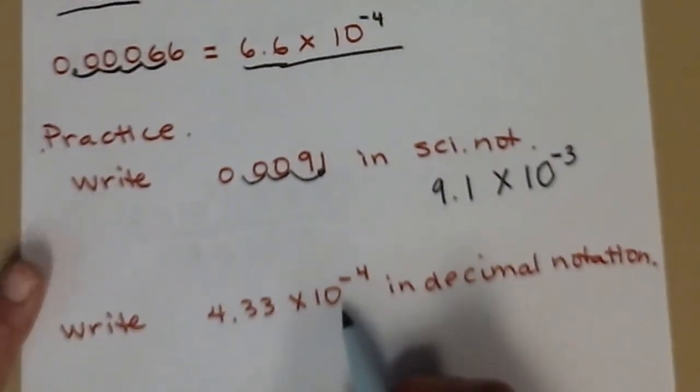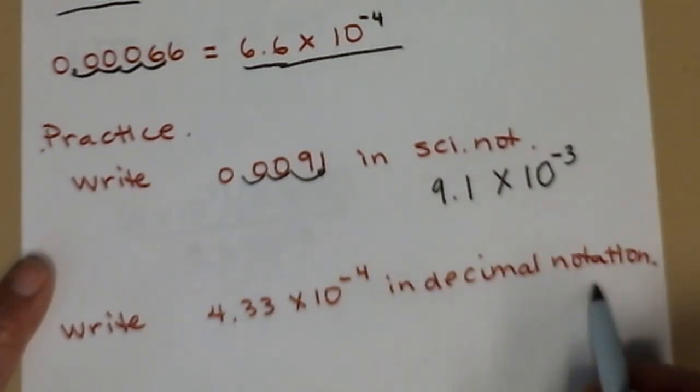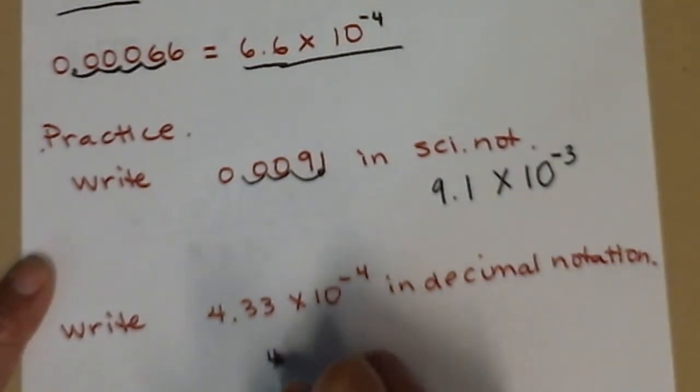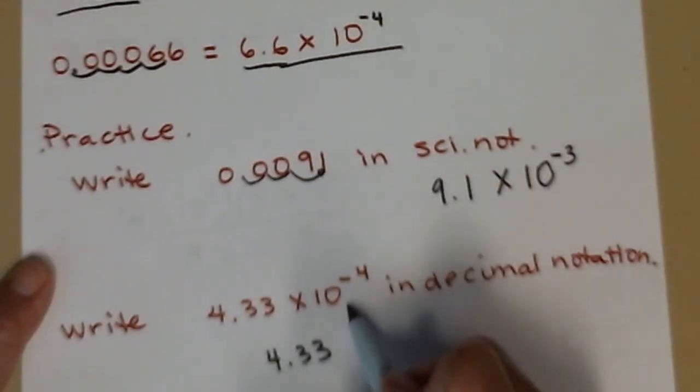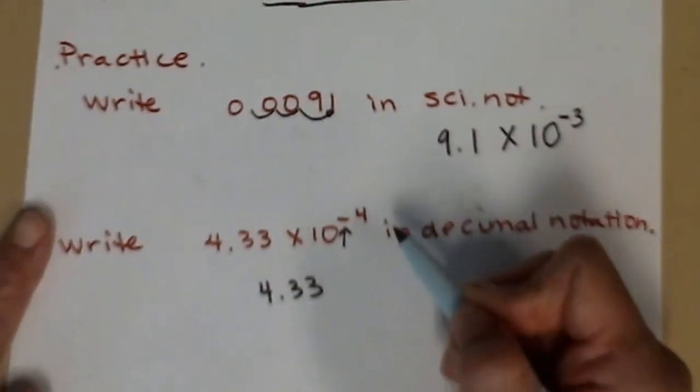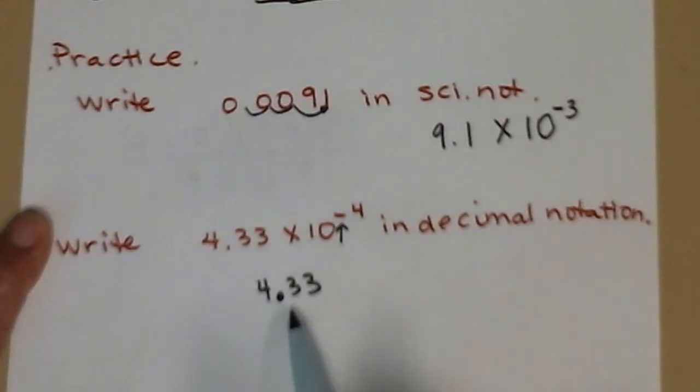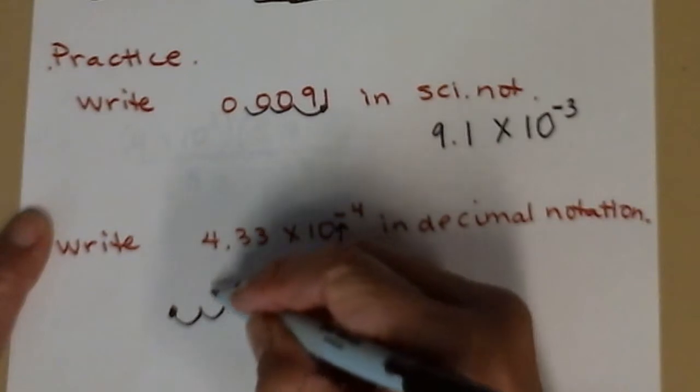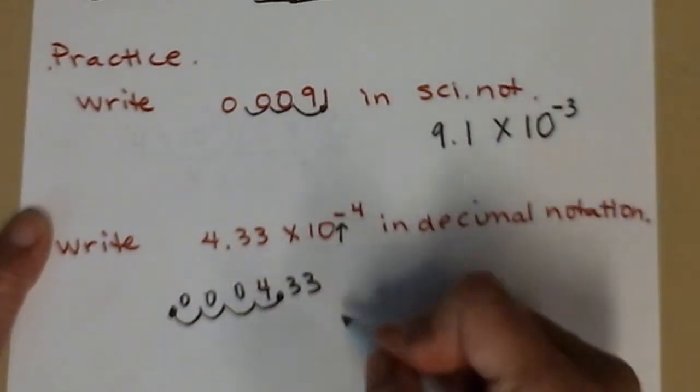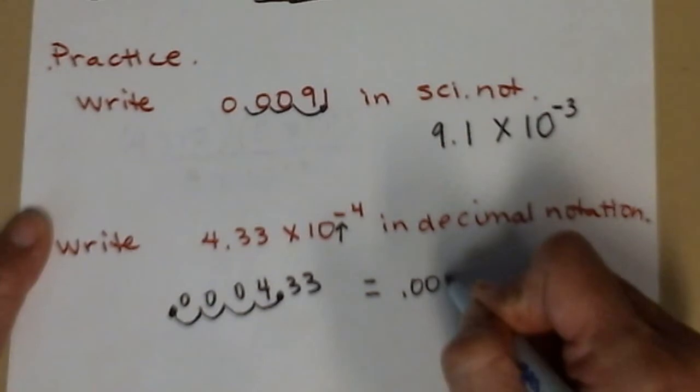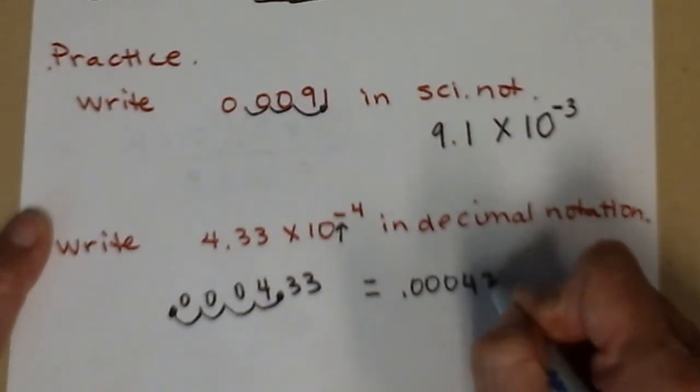And then it goes reverse, right? When I go from scientific to decimal, 4.33. Now I need to swoop to get this 10 to the negative 4 part. So I need to get to a small number. So I put my pen where the decimal currently is and I'm going to swoop 4 to the left: 1, 2, 3, 4. And then rewrite it nicely: 0.000433.